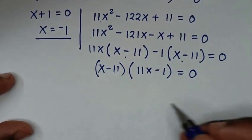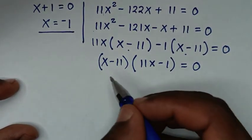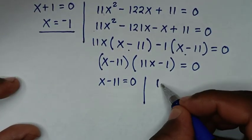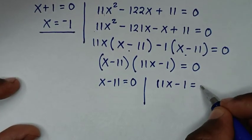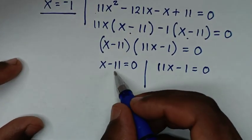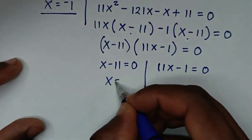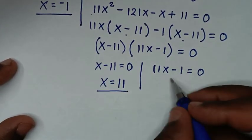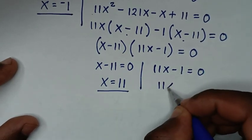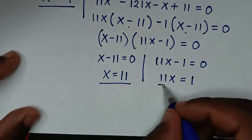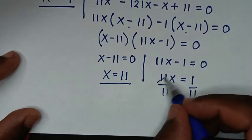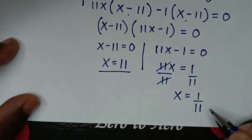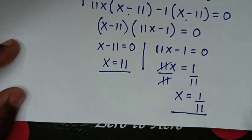From here we have two solutions: x minus 11 equals 0, giving x equals 11 as the second value of x. And 11x minus 1 equals 0, giving 11x equals 1, so x equals 1 over 11 as the third value of x.